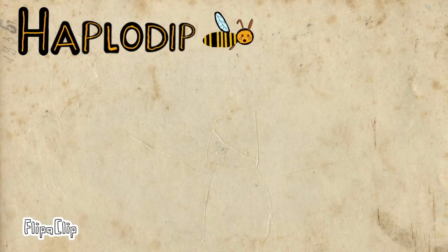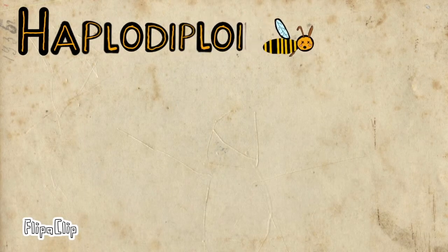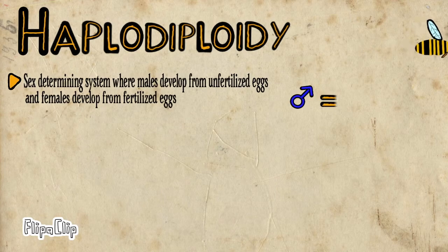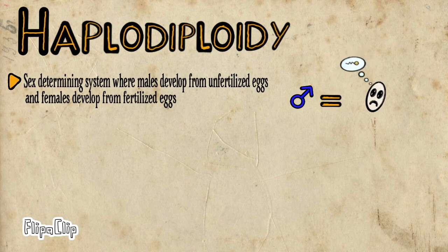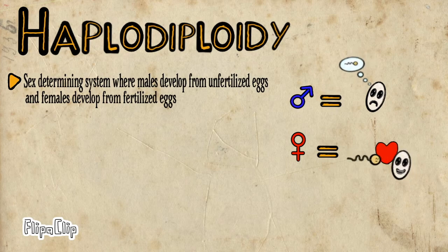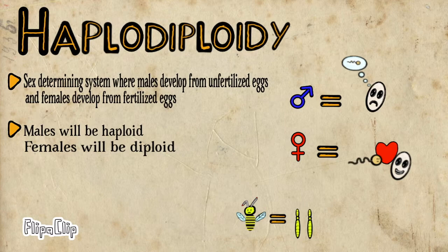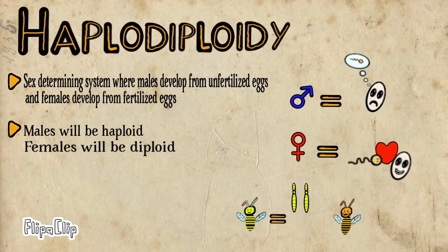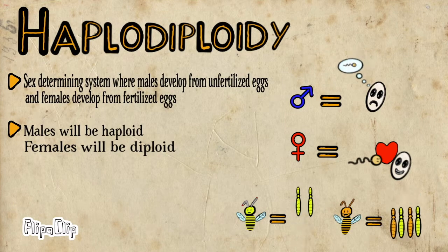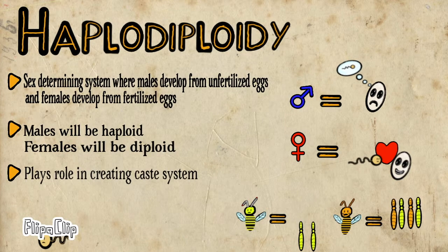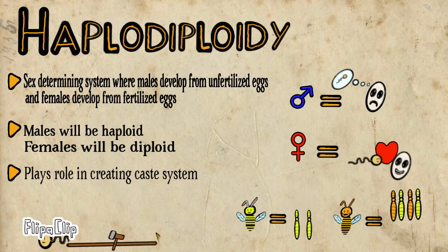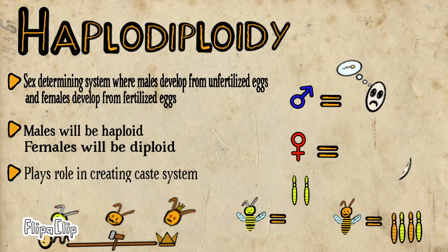First we look at haplodiploidy's role in eusocial evolution. Haplodiploidy is a sex-determining system whereby males develop from unfertilized eggs and females develop from fertilized eggs. As a result, males are haploid and females are diploid. This differentiation in ploidy allows for the caste system in eusociality to exist.